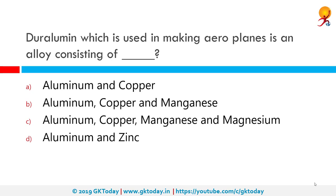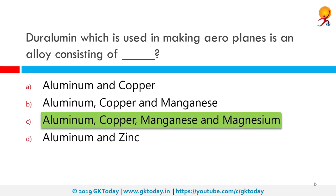Duralumin, which is used in the making of aeroplanes, is an alloy consisting of what? The correct answer is aluminium, copper, manganese and magnesium. Aircraft manufacturers use high-strength duralumin, principally alloy 7075, to strengthen aluminium aircraft structures. Aluminium alloy 7075 has copper at 1.6%, magnesium at 2.5% and zinc at 5.6% added for ultimate strength, but the copper content makes it very difficult to weld.